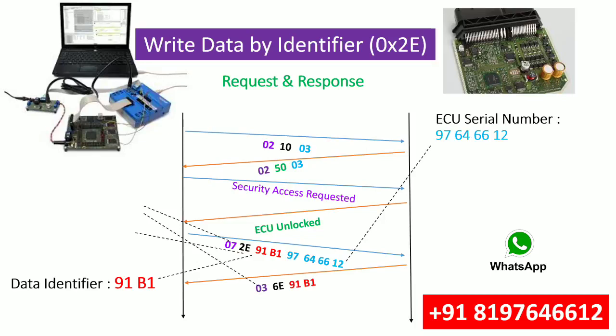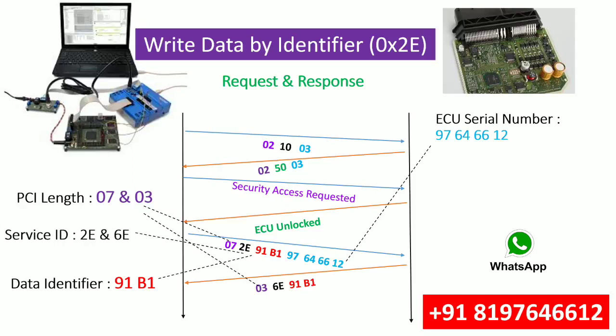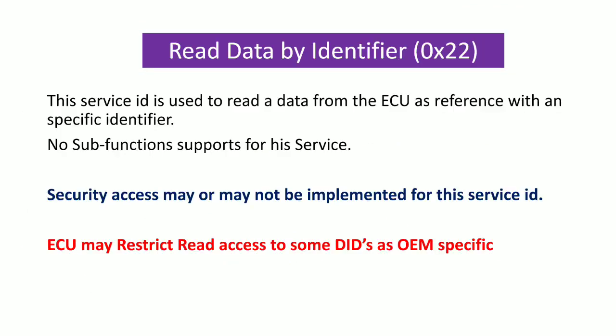0x03 is the PCI length, 0x2E is the service ID, and 0x6C is part of the identifier. Now that we have written the ECU serial number into the ECU, we want to retrieve it. To do that we use Read Data by Identifier.